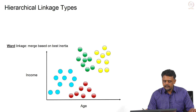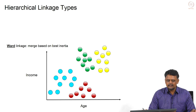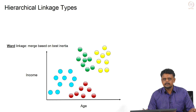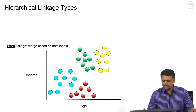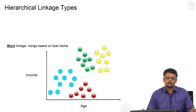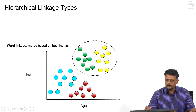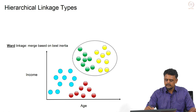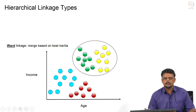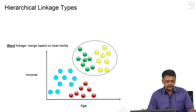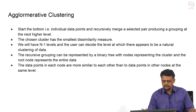Finally, Ward linkage or centroid-based linkage merges clusters based on best inertia, which is the same concept used in the k-means algorithm. It is the distance between the centroids of the clusters. Clusters whose centroids are closest would be merged. The dissimilarity metric is basically the distance between the centroids of each of the clusters.